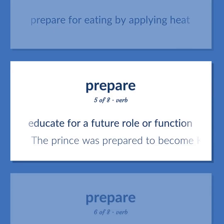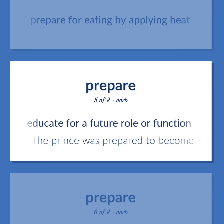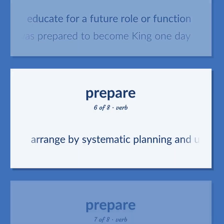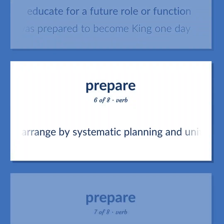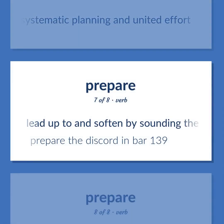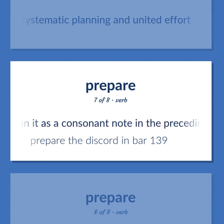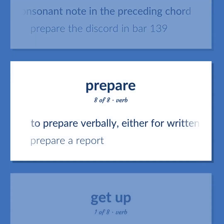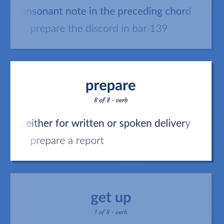Prepare: to educate for a future role or function. Example: the prince was prepared to become king one day. Also: to arrange by systematic planning and united effort. Also: to lead up to and soften by sounding the dissonant note in it as a consonant note in the preceding chord. Example: prepare the discord in bar 139. Also: to prepare verbally, either for written or spoken delivery. Example: prepare a report.